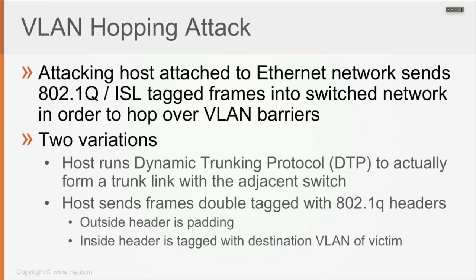There are two variations of this VLAN Hopping Attack. The first is when the attacker runs DTP with the connected switch to actually form a trunk link and be able to send tagged frames in the network.